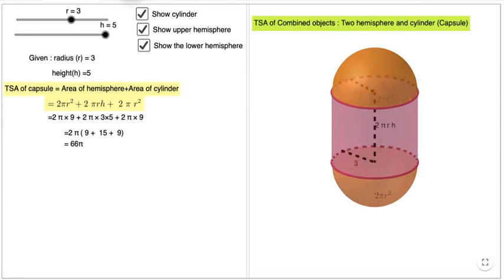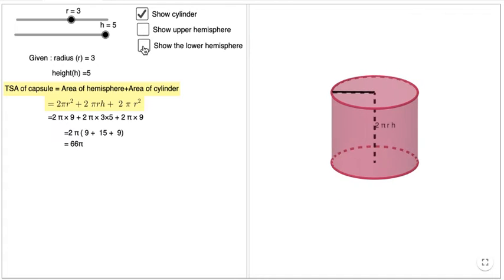Total surface area of a capsule. A capsule is a combined object of two hemispheres and a cylinder as shown in the model. These are the various objects involved.